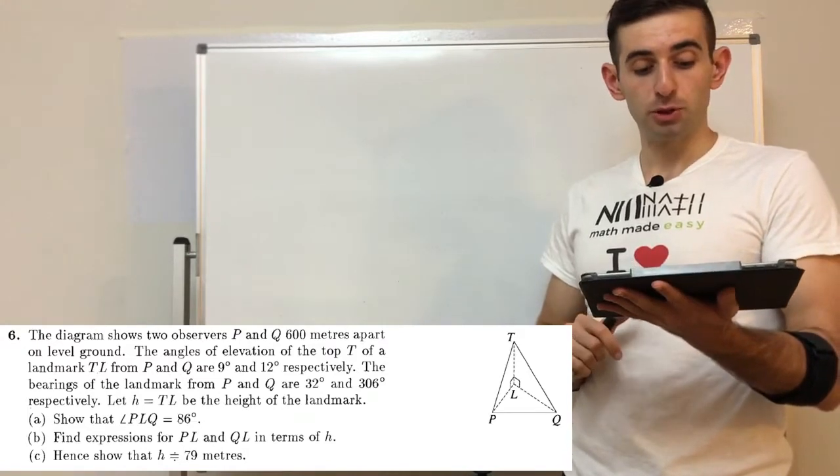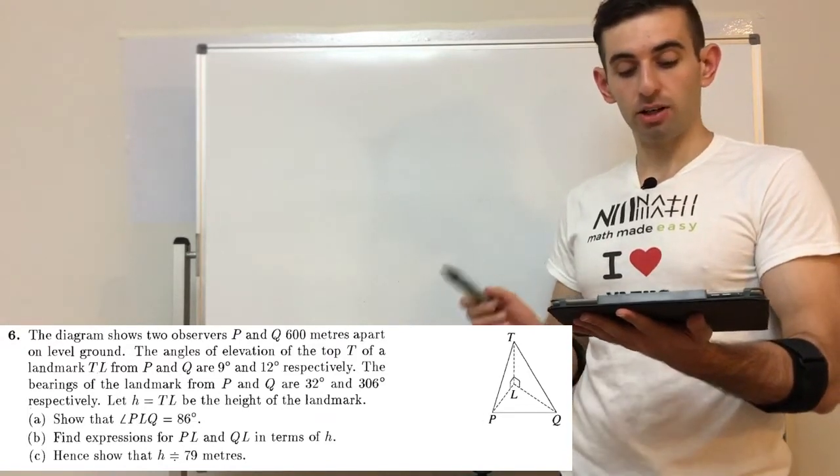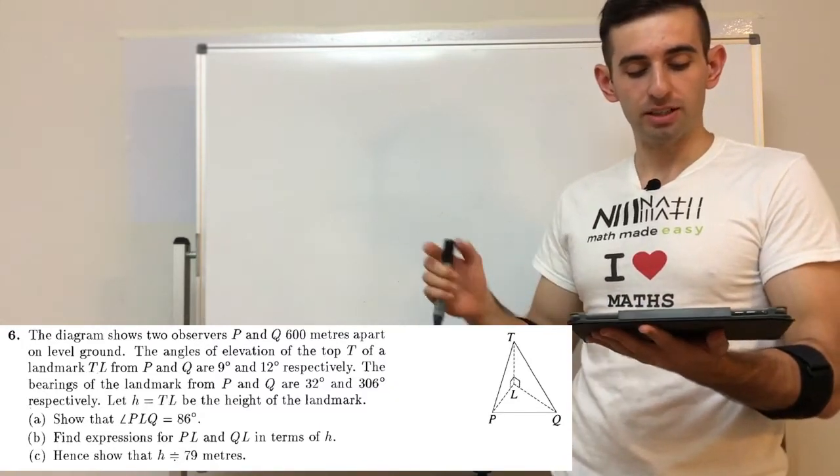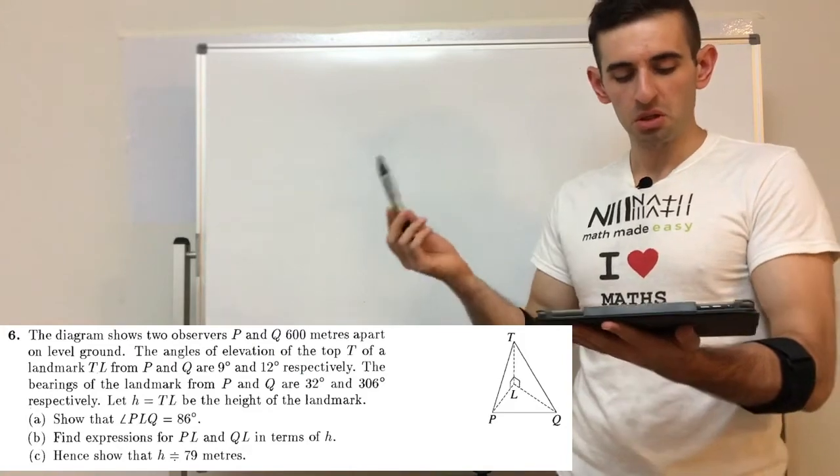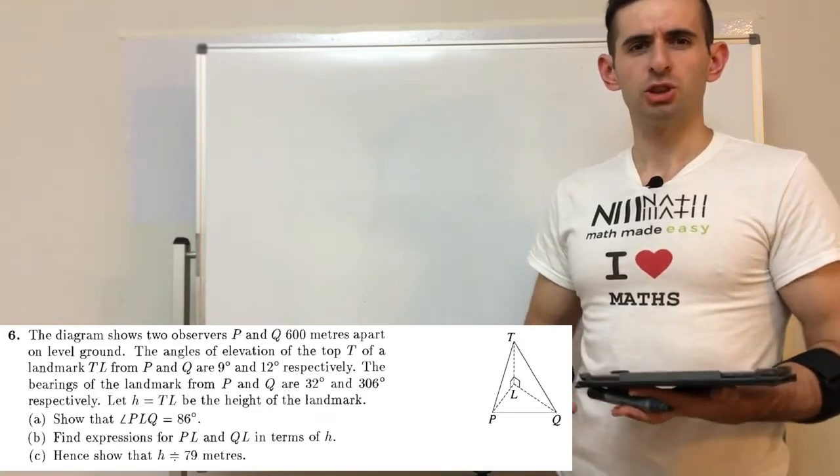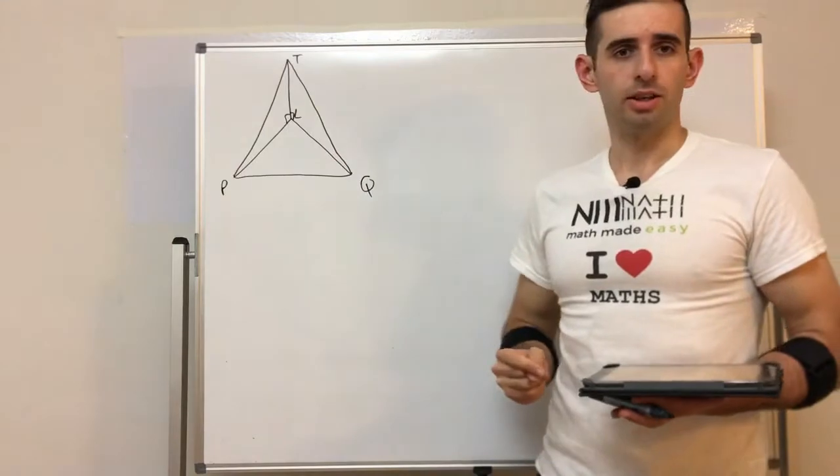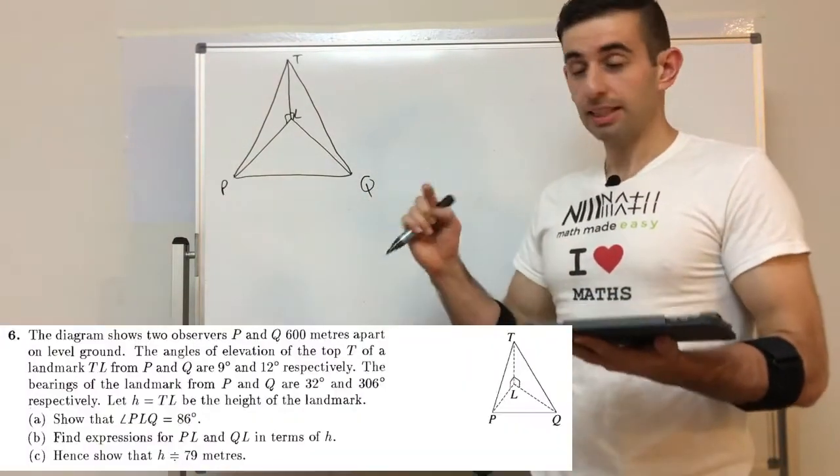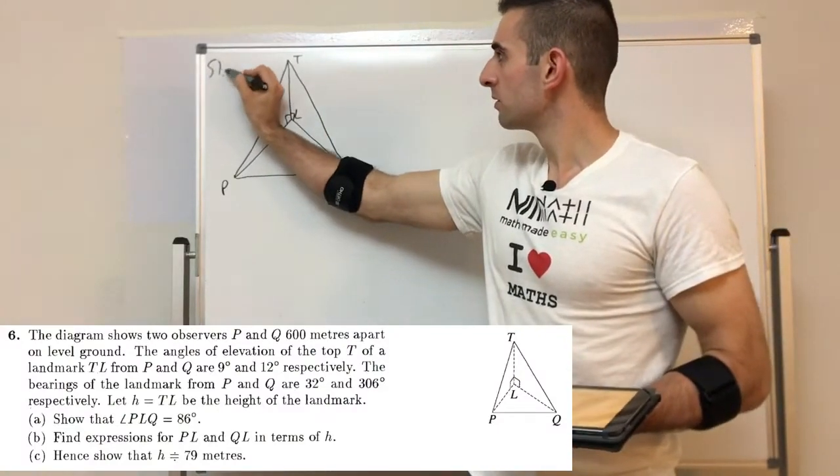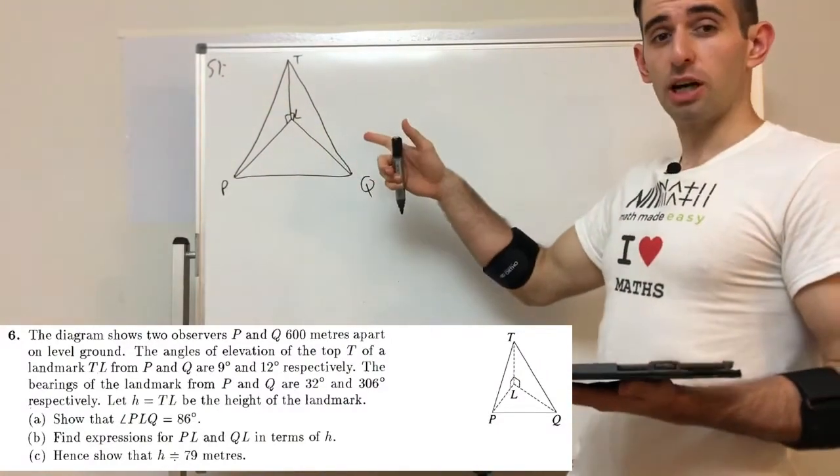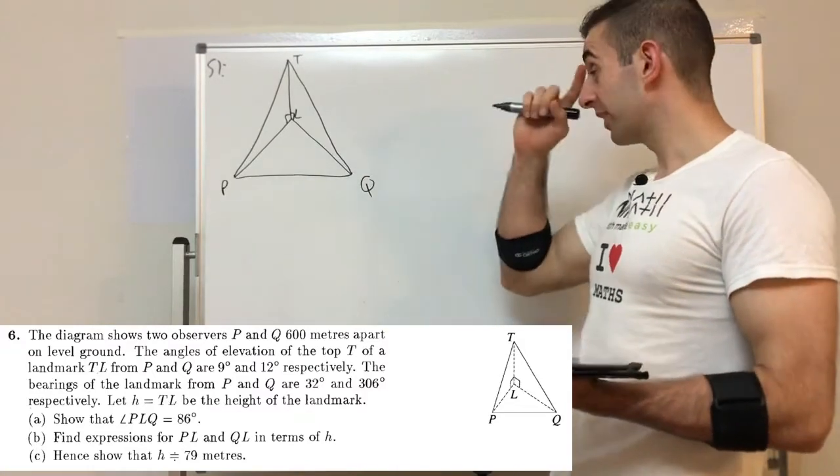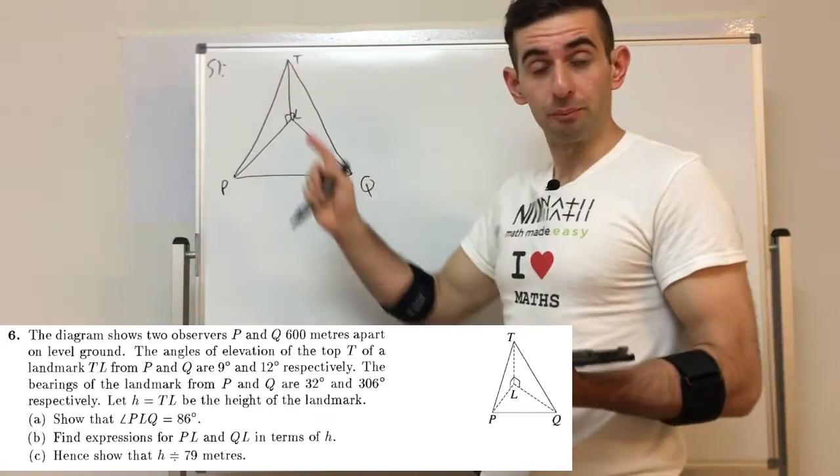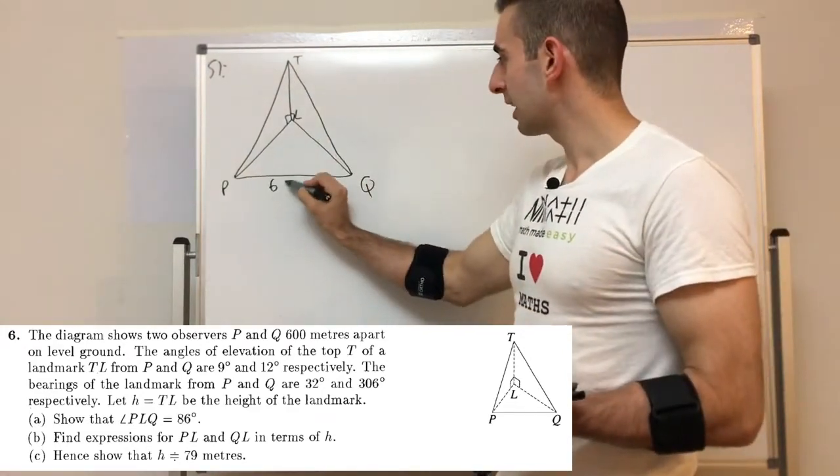Alright, so I've got the question here. The diagram shows two observers P and Q 600 meters apart on level ground. The angles of elevation of the top T of a landmark TL from P and Q are 9 and 12 degrees respectively. So now step one, let's put—they've given us the basic diagram which really helps, but now we're going to label all the given info on that diagram and they've labeled every point for us which is very helpful.